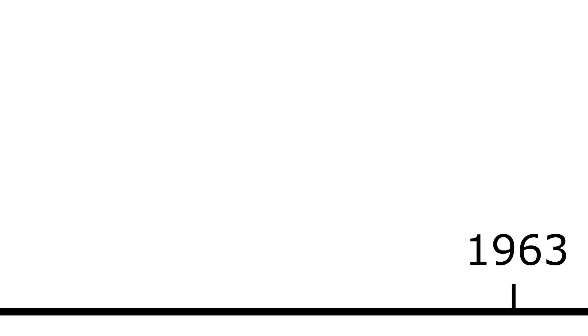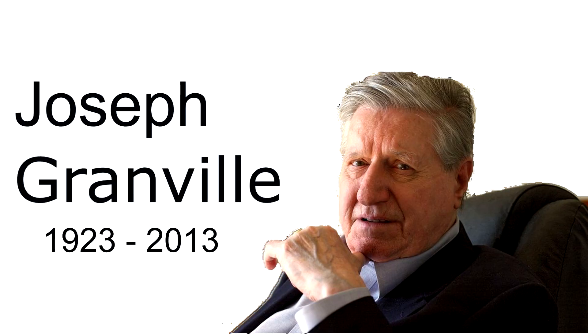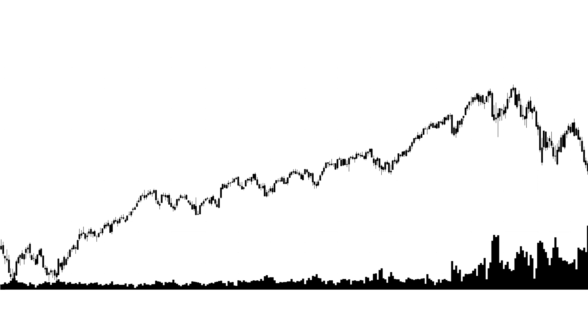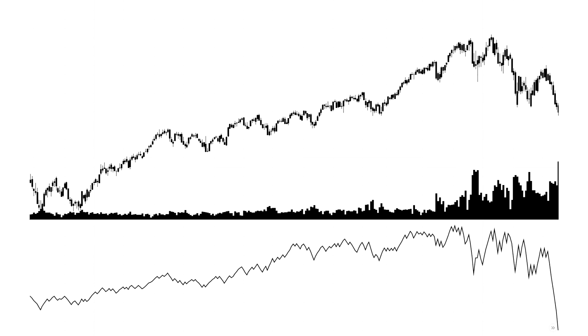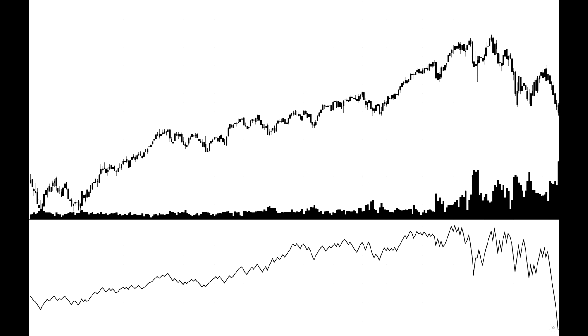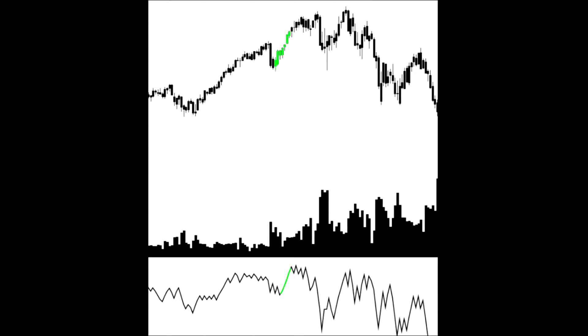This is where Joseph Granville came in. The development of on-balance volume came about in the early 1960s, and was first published in Granville's book, The New Key to Stock Market Profits. One of the first indicators to use market volume, the on-balance volume is the total of the volume starting from zero on the first candle.